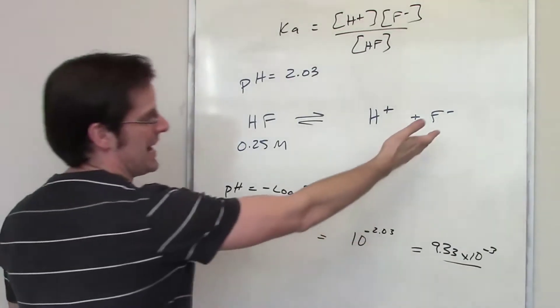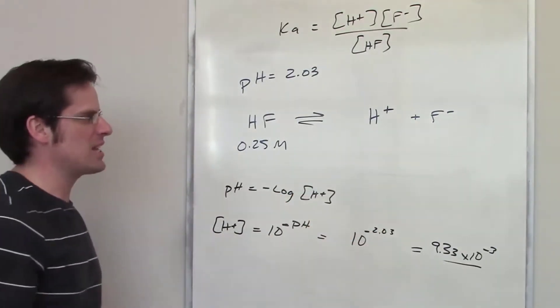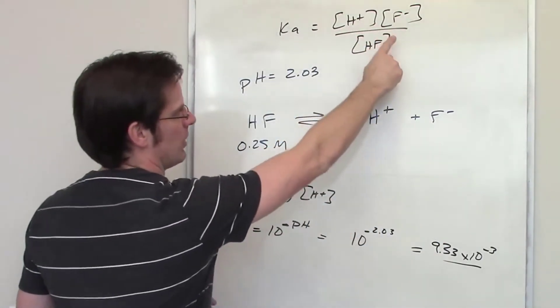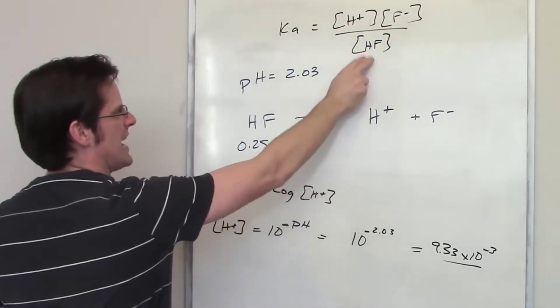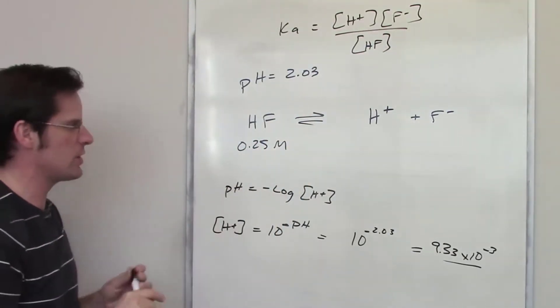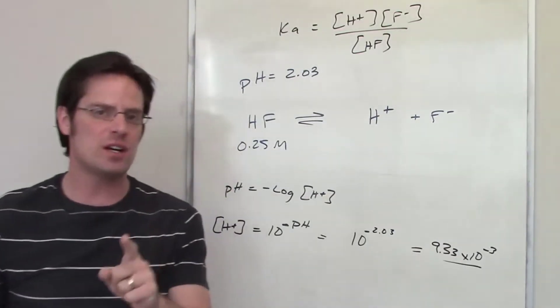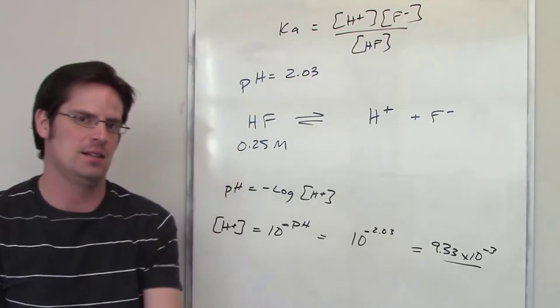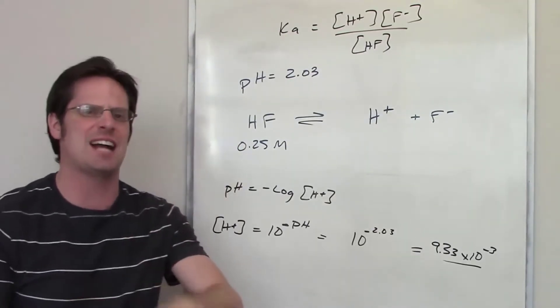The concentration of F minus at equilibrium is presumably the same because they're present in a one-to-one stoichiometric ratio. So, I can take those numbers and throw them up here. But what is the concentration of HF going to be at equilibrium? Now, remember, 0.25 molar is not the concentration of HF at equilibrium. That's the concentration, according to my problem, of HF right at the beginning of this reaction when this reaction was actually set up.